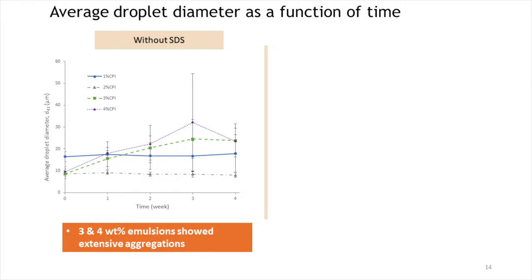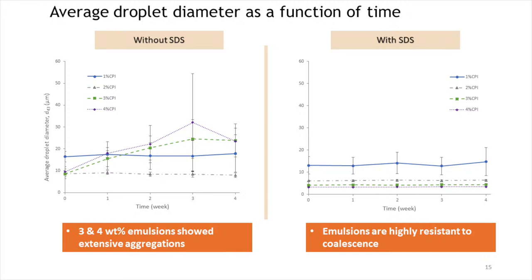The average droplet diameter in terms of D4,3 (volume average) was measured as a function of time. The emulsions stabilized with 1 and 2% canola protein showed no significant changes after 4 weeks, while those with 3 and 4% showed extensive particle aggregation, reaching a maximum after 3 weeks of storage. When mixed with SDS, the D4,3 of all emulsions dropped and showed no significant change with time, indicating high resistance to coalescence due to the thick interfacial membrane formed by canola protein around the droplets.